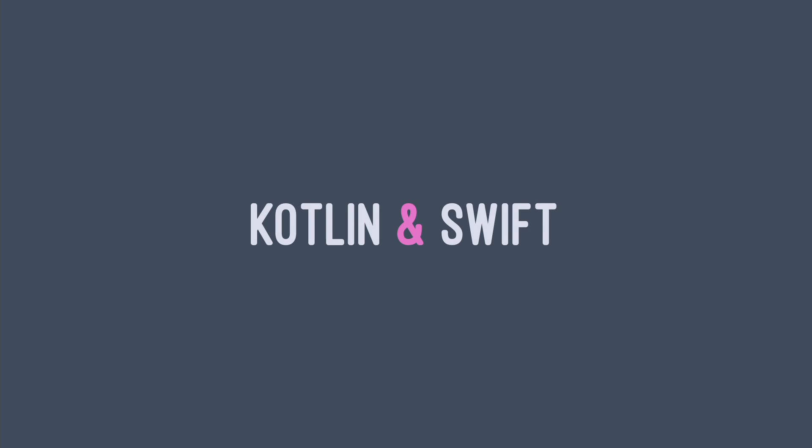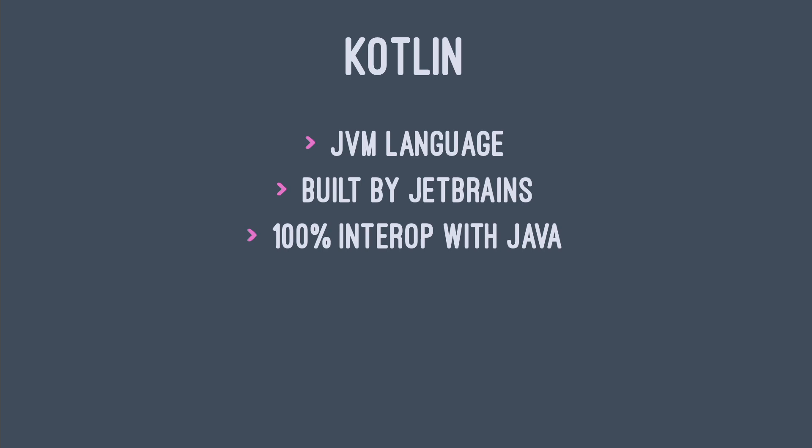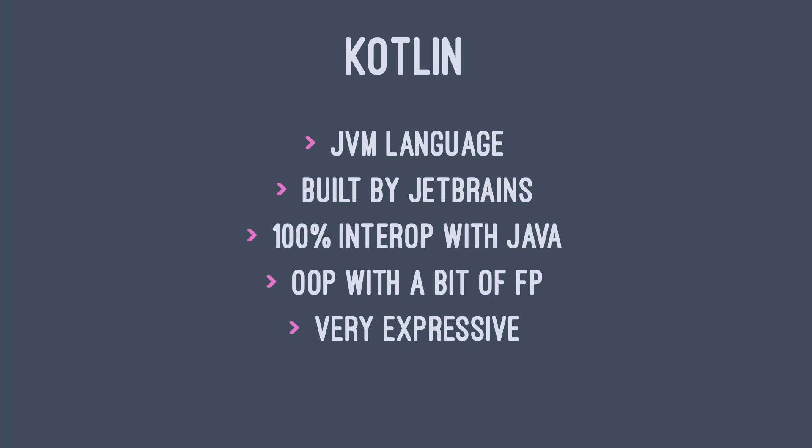Let's start with the language we use for our respective platforms. Everyone here is probably already familiar with Swift, but you may not have heard of Kotlin. It's a JVM language built by JetBrains, the makers of Android Studio and IntelliJ. Its aim is to have 100% interoperability with Java, which sometimes holds Kotlin back a little bit. It has a similar philosophy to Swift — primarily object-oriented, but with first-class support for a few features from functional programming, and it's very expressive in some really beautiful ways.